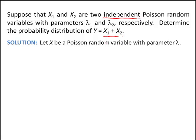In order to start this problem, we need to know the moment generating function of a Poisson random variable with parameter lambda. The moment generating function of a Poisson is e to the lambda times e to the t minus 1 in the exponent — that is, e^(λ(e^t − 1)). This is the moment generating function of a Poisson random variable with parameter lambda.